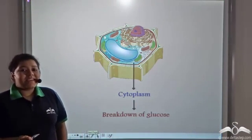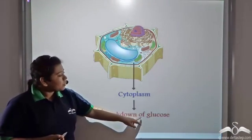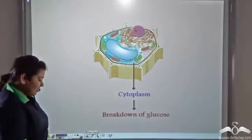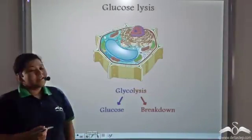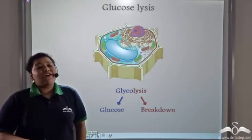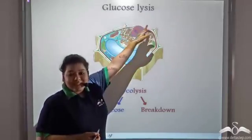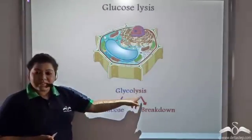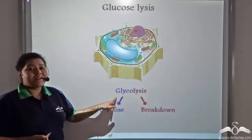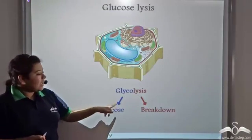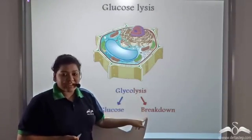Similarly, in plant cells, glucose is broken down in the cytoplasm. Now this process of breaking down of glucose or glucose lysis is known as glycolysis, where glyco comes from the word glucose and lysis means breakdown.